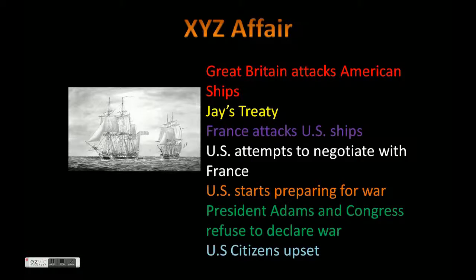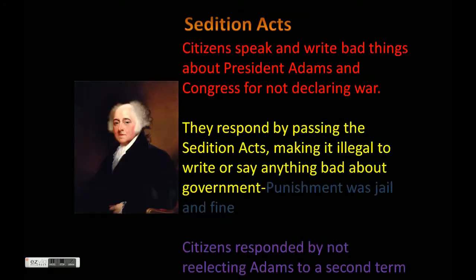President Adams sent ambassadors to France to negotiate some type of peace, but this didn't go the way we wanted. This is really what the XYZ Affair was about — we were disrespected, and it got referred to as the XYZ Affair. The US started preparing for war and we did have an undeclared naval battle with France. However, President Adams and Congress refused to declare war because we didn't have a prepared military and we didn't have the money to fight.